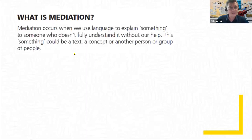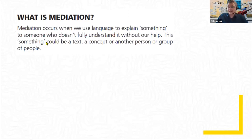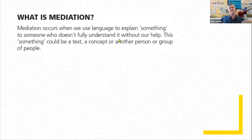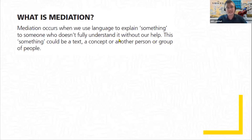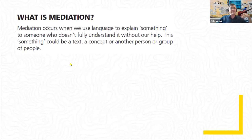There are lots of ways to define mediation. This is the explanation from the back of the Voices teacher's book: mediation occurs when we use language to explain something to someone who doesn't fully understand it without our help. That 'something' could be a text, an idea, a concept, or a person. As Chia said, we can think of mediation like a bridge — a bridge to understanding, or a bridge between you and someone else.